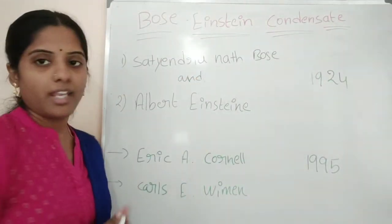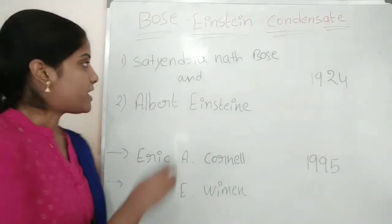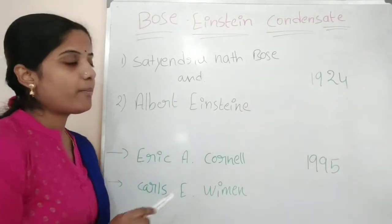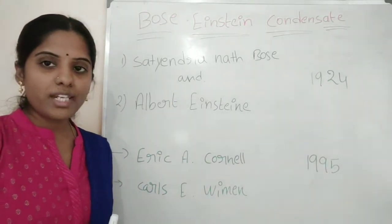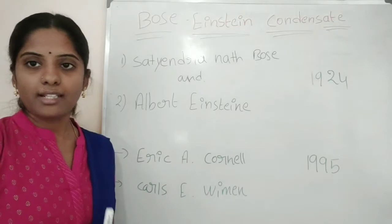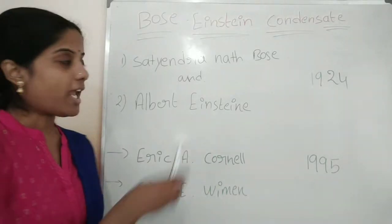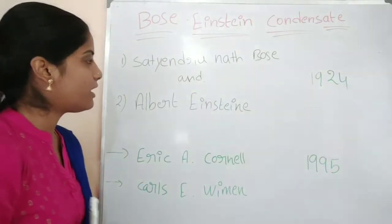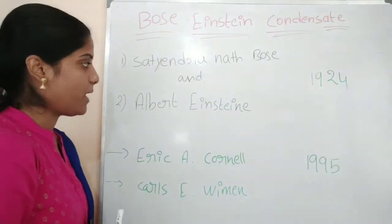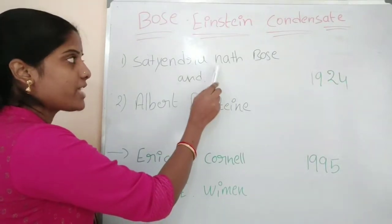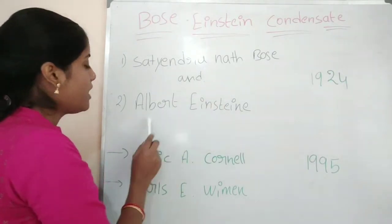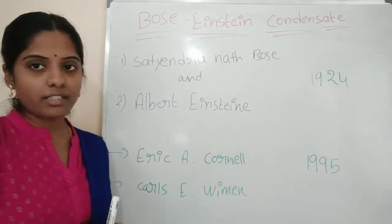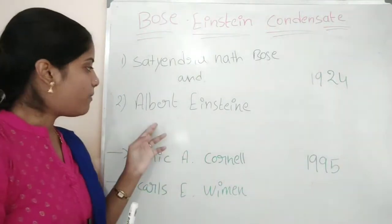Satyendranath Bose is an Indian physicist. He proposed that gas particles cooled to very low temperatures can create a new state of matter. That idea — of how to create a new state of matter — belongs to Satyendranath Bose. Statistically, the German physicist Albert Einstein also contributed to this.